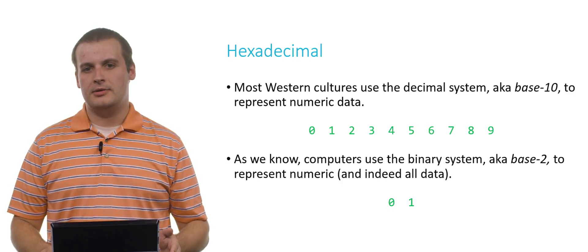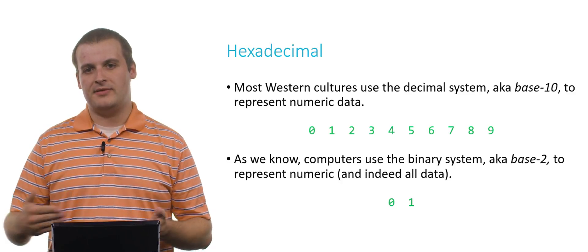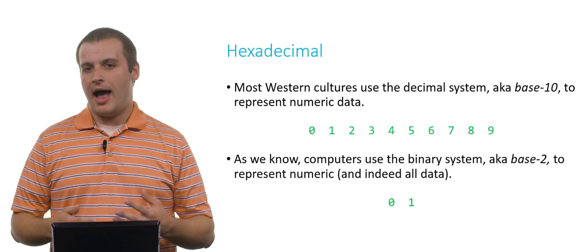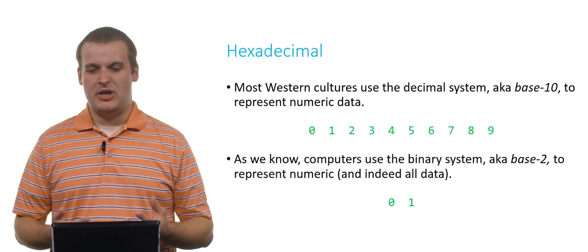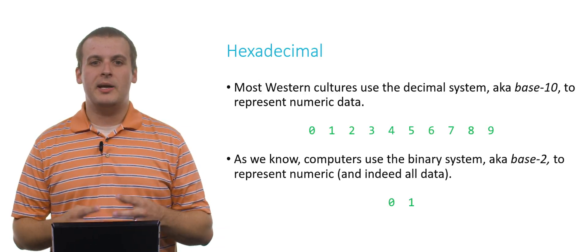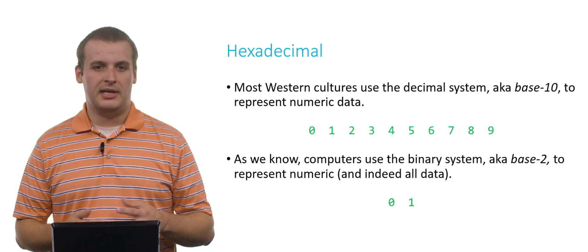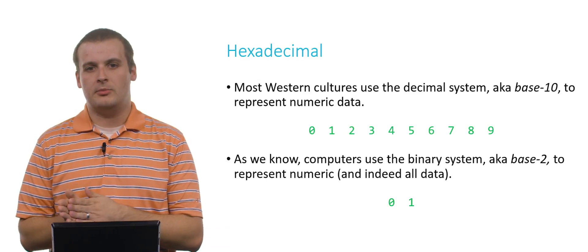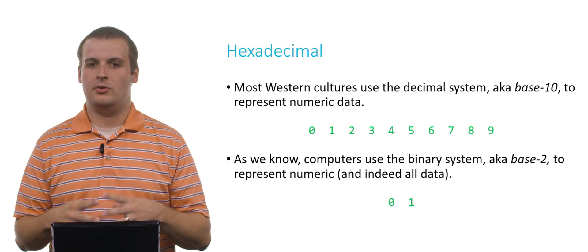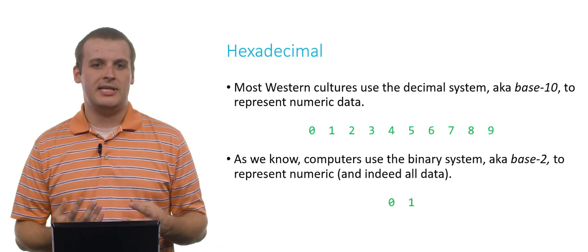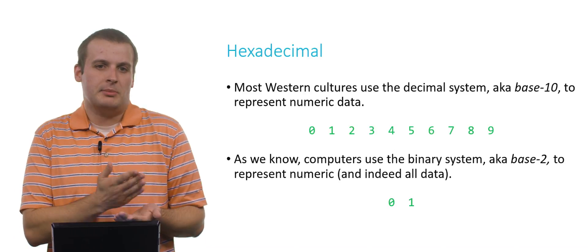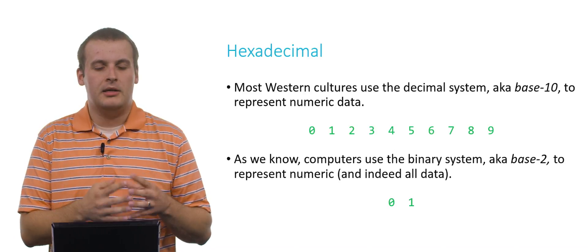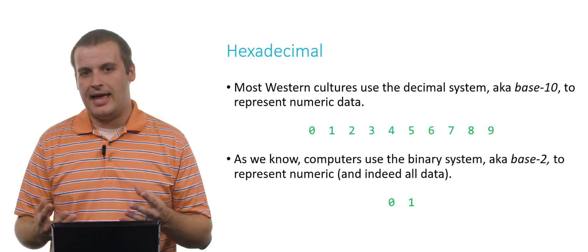We have the digits 0, 1, 2, 3, 4, 5, 6, 7, 8, 9. And if we need to represent values higher than 9, we can combine those digits using the notion of place value. So for 10, we have a 1 digit followed by a 0 digit, and we intuitively understand that we're multiplying the first 1 by 10 and then adding 0 for a total of 10.